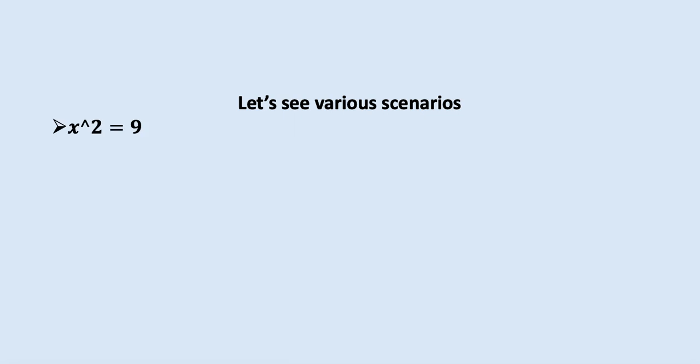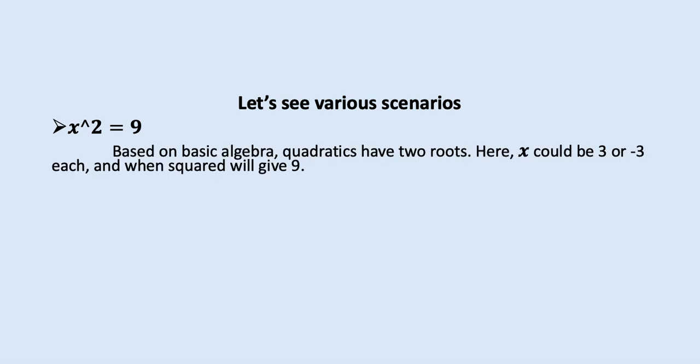We have 4 common scenarios. In the first scenario, we take the square of a variable and equate it to some constant. Here we have variable x and constant 9, so x squared is equal to 9. Based on basic algebra, a quadratic always has two roots — x can be 3 or x can be minus 3, because either one squared gives 9. So in this scenario, we always have two roots.